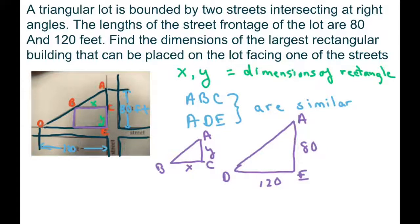Hi everyone, a triangular lot is bounded by two streets intersecting at right angles. The lengths of the street frontage of the lot are 80 and 120 feet. Find the dimensions of the largest rectangular building that can be placed on the lot facing one of the streets.